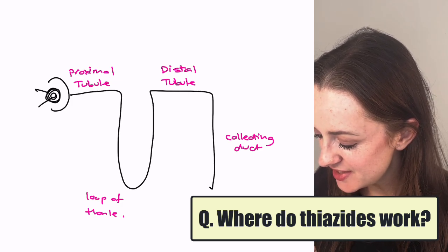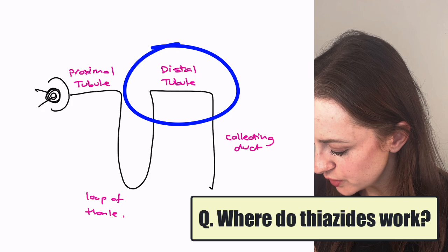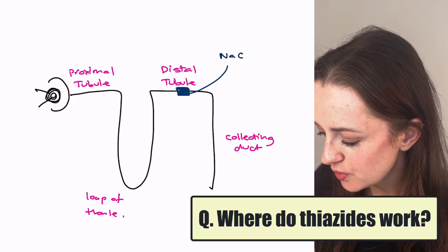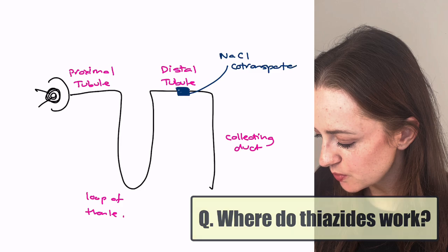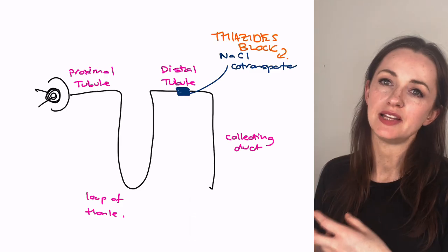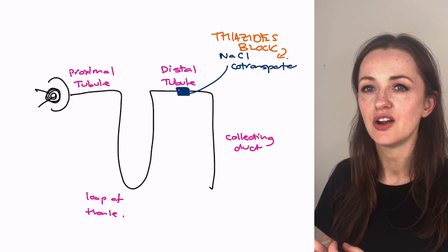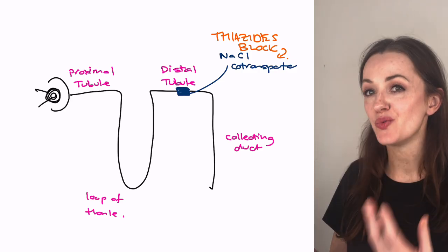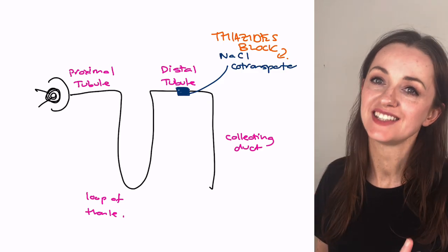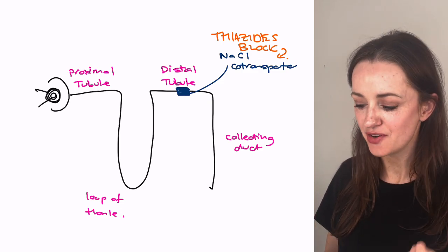It is of course the distal convoluted tubule and it blocks the sodium chloride co-transporter. So by blocking the sodium chloride co-transporter there's going to be less sodium coming back into the body here and therefore more sodium going into the urine and water follows sodium wherever it goes so we'll also lose a little bit more water and that's how it works as a diuretic.